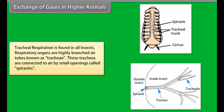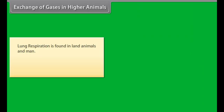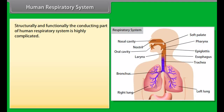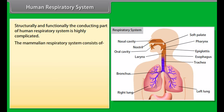Gill respiration is found in crustaceans, cartilaginous fishes, bony fishes, and tadpoles of amphibians. It is also called branchial respiration. Oxygen is received from water, and exchange of oxygen from water and CO2 from blood capillaries present in gill lamellae occurs when water passes through the gills.